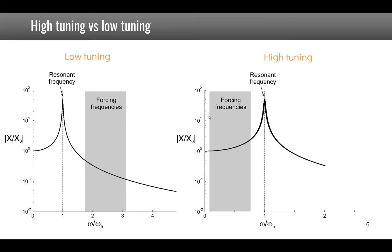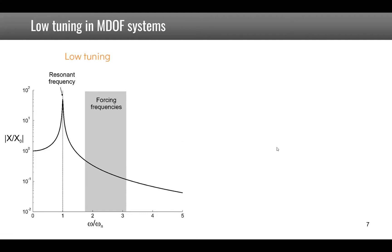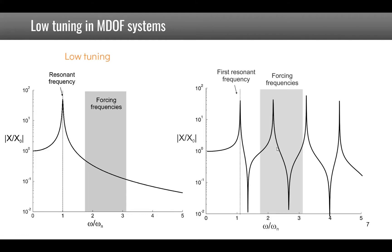From this graph it would seem clear that it's better to use low tuning, because the response at low tuning is lower than the response at high tuning, where you have some amplification due to resonance. But if you look at a system with several frequencies, the risk of low tuning is that by putting the first resonance frequency lower than the forcing frequency, you might have other natural frequencies that match the forcing frequencies.